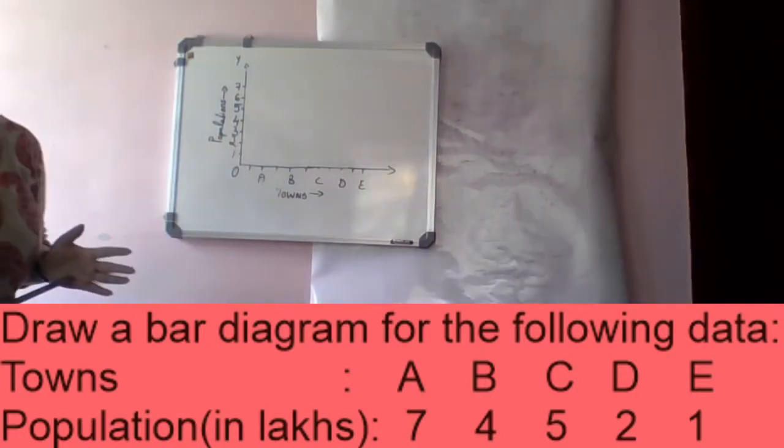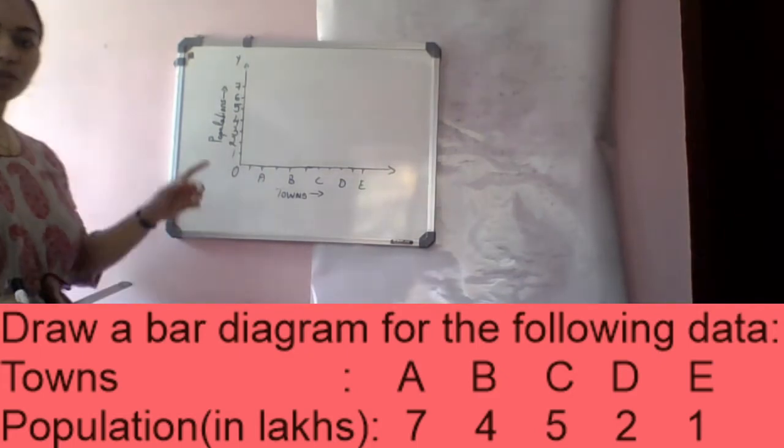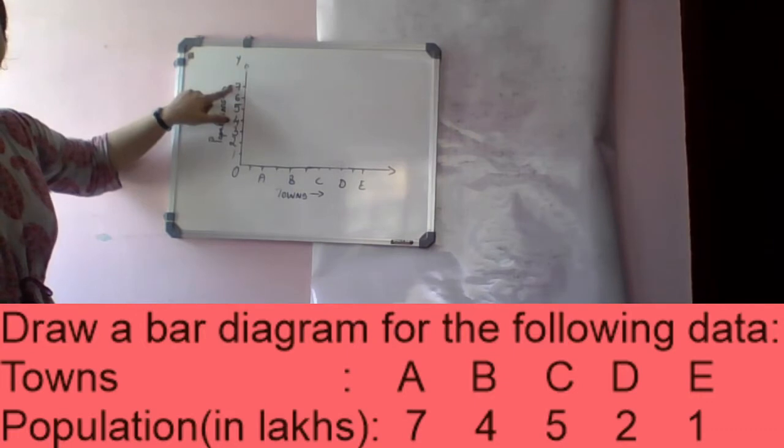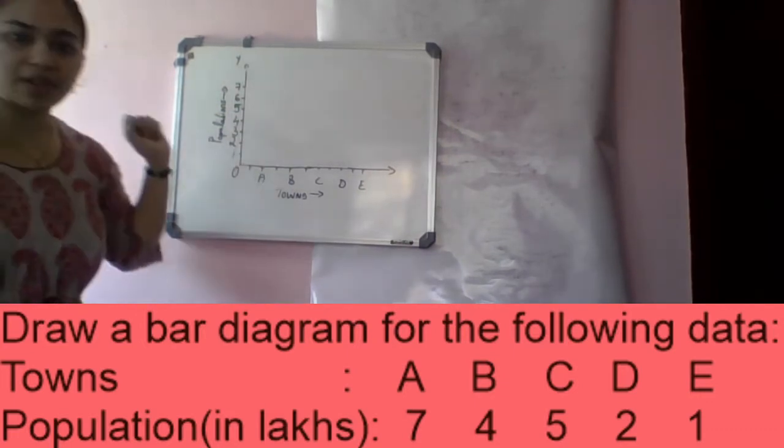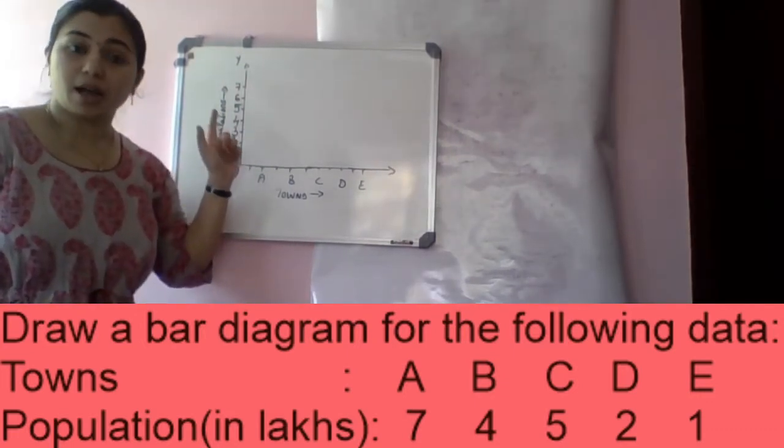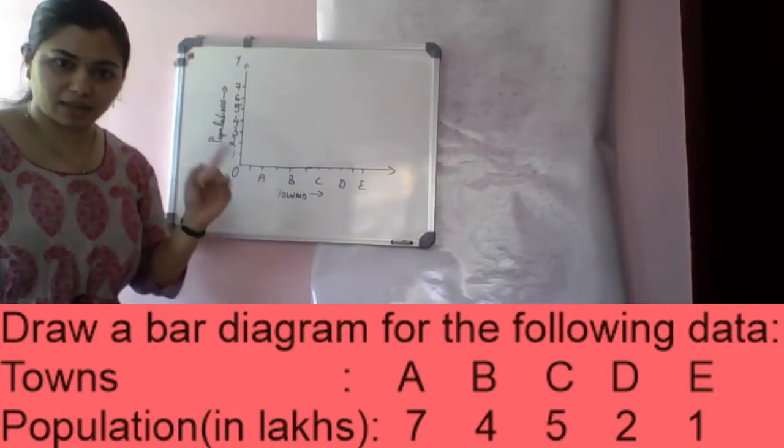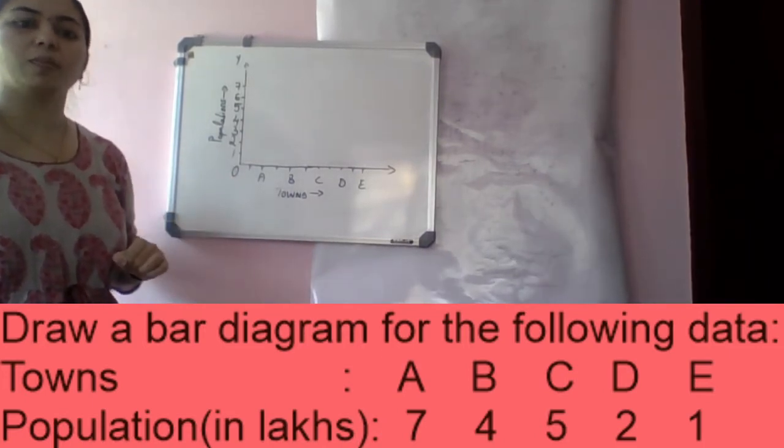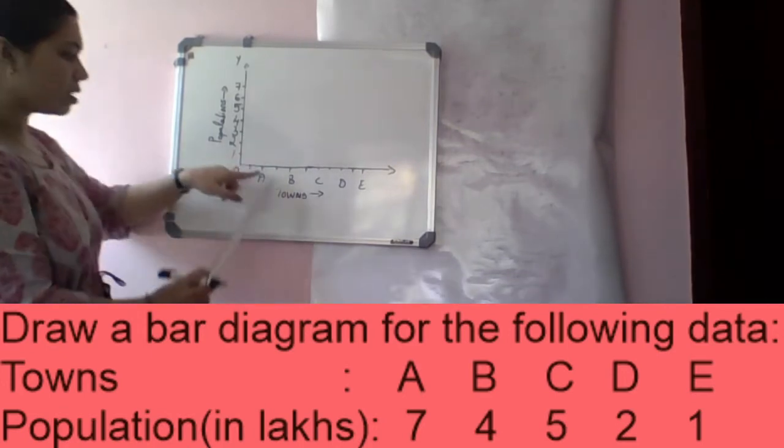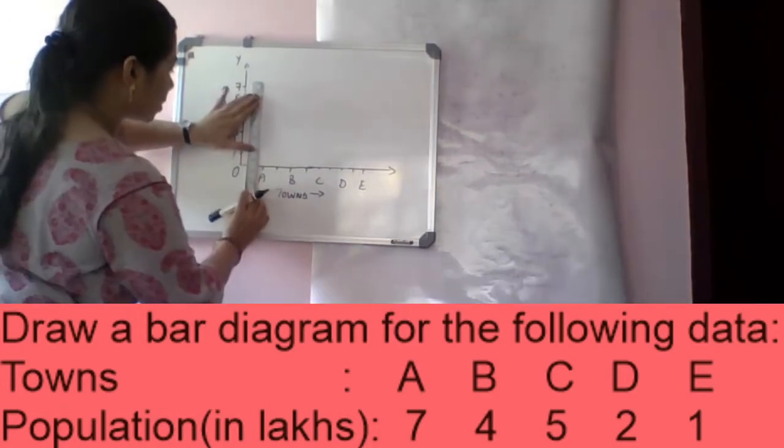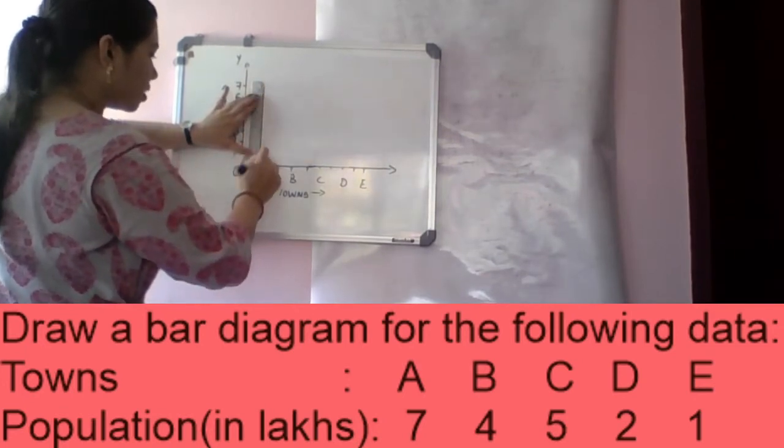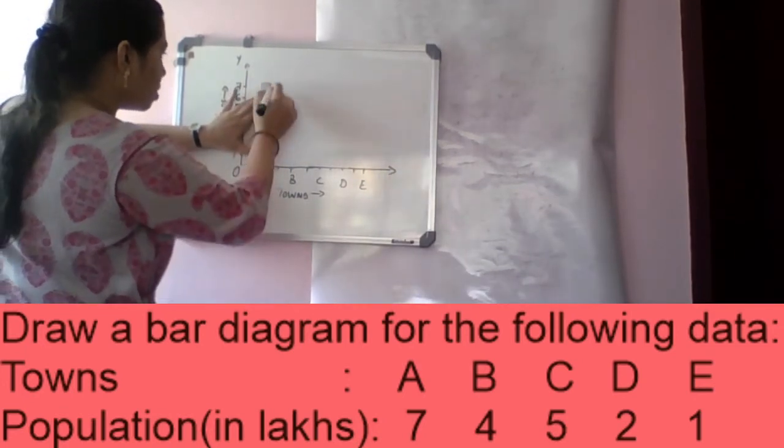Lines, we use the bars. So first one, population is 7. So in 7 length, we use the bar diagram. We should plot bars. So here we use the bar diagram. Same way, so here we use the bar diagram.